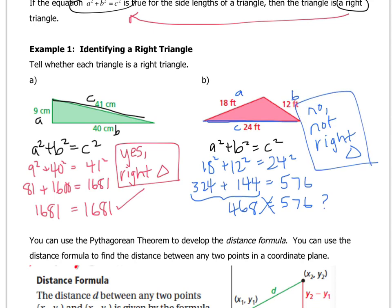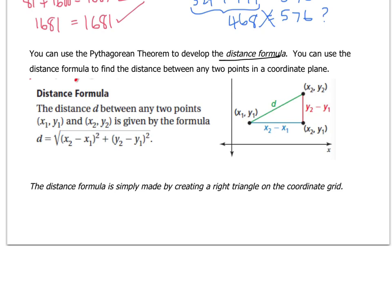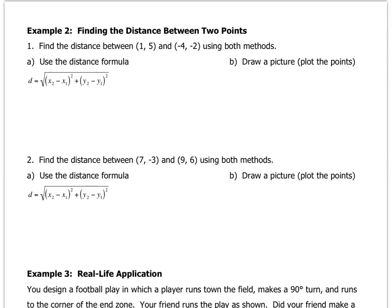You can also use the Pythagorean theorem on the coordinate grid, where we use something called the distance formula. The distance formula might look scary, but you'll recognize parts of it from the slope formula — we used x2 minus x1 and y2 minus y1 there. We're just taking the rise and run values and turning them into a Pythagorean theorem-style formula. So it's really just the Pythagorean theorem applied to the coordinate grid.